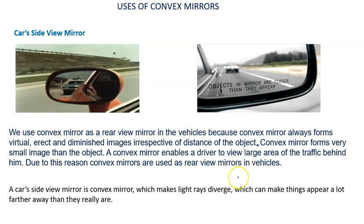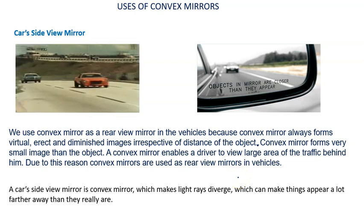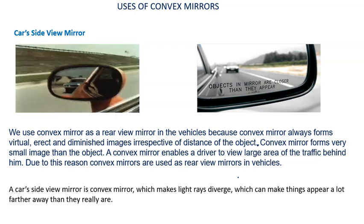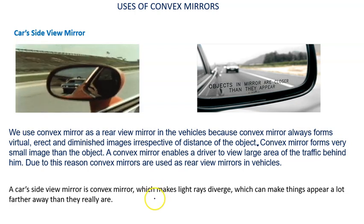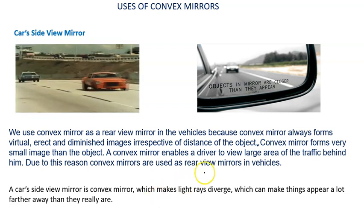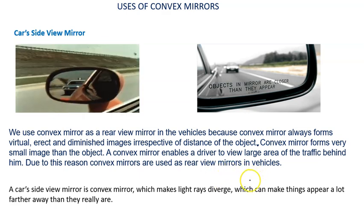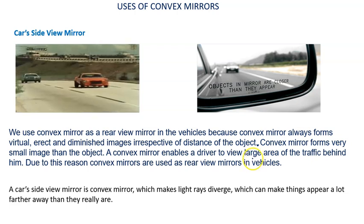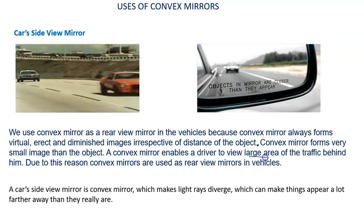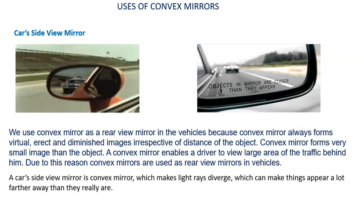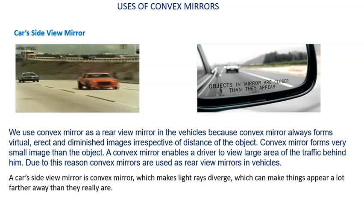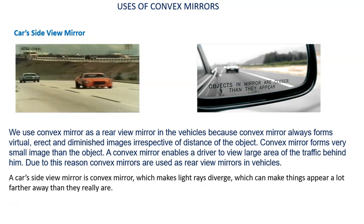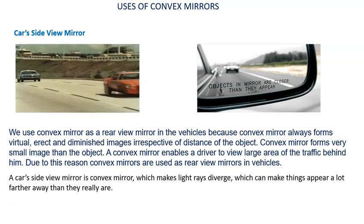A convex mirror forms a very small image of the object, which enables a driver to view a large area of the traffic behind him. The main reason convex mirrors are used as rear-view mirrors is that they give a large field of view. However, convex mirrors make things appear farther away than they really are, which is why it is written that objects in the mirror are closer than they appear.